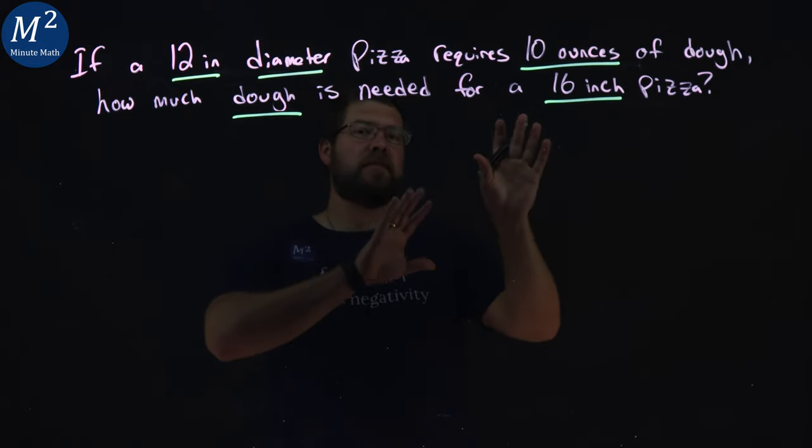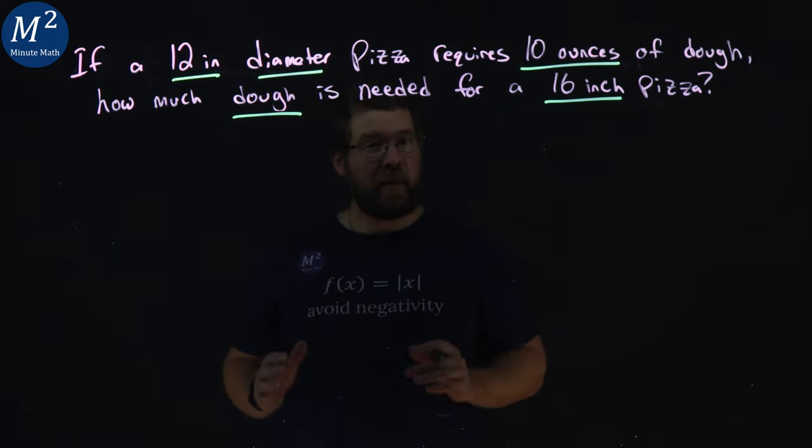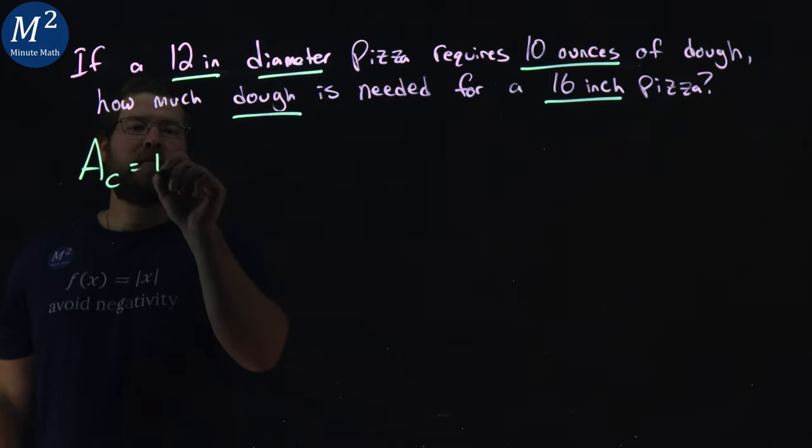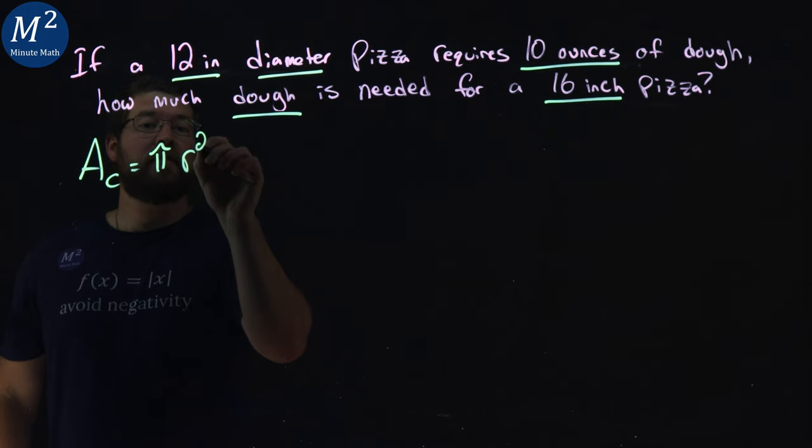Now, notice pizzas are measured in the diameter. Our formula for the area of a circle is pi times our radius squared.